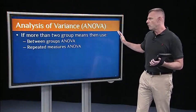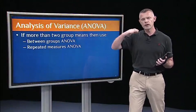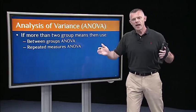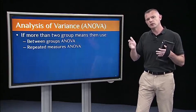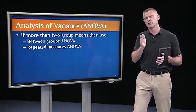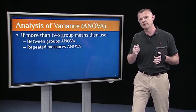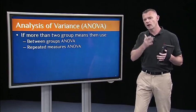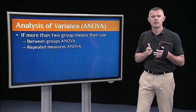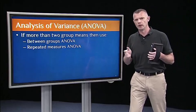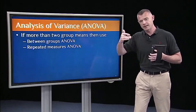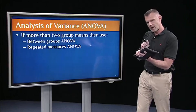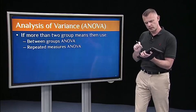Analogously, if you have more than two group means — three or more, as many as you want — if they're all independent, then we call that a between-groups ANOVA. That's analogous to the independent t-test. If you have more than two group means that are all coming from the same subjects, then we call that repeated measures ANOVA, and we'll cover that two lectures from now. For now, we're just going to stick with the one-way between-groups ANOVA.